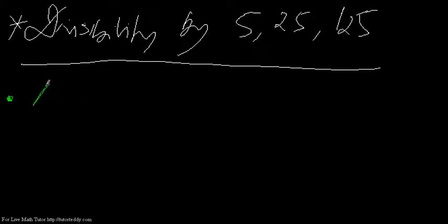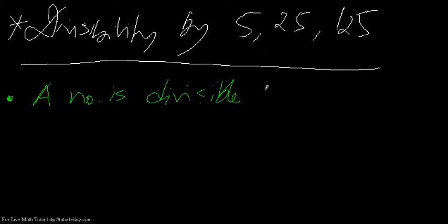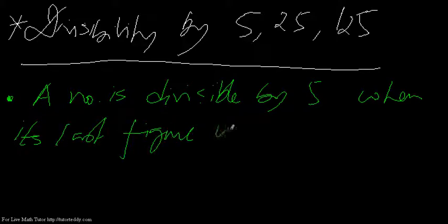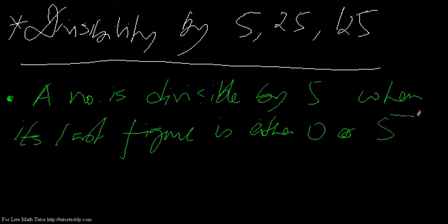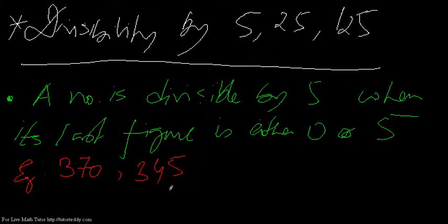We can say that a number is divisible by 5 when its last figure is divisible by 5 — that is, either 0 or 5. For example, take a number like 370. The last figure is 0, that means this number is surely divisible by 5. Or take a number like 345 — the last figure is 5. When you have the last figure as 0 or 5, the number will be surely divisible by 5.